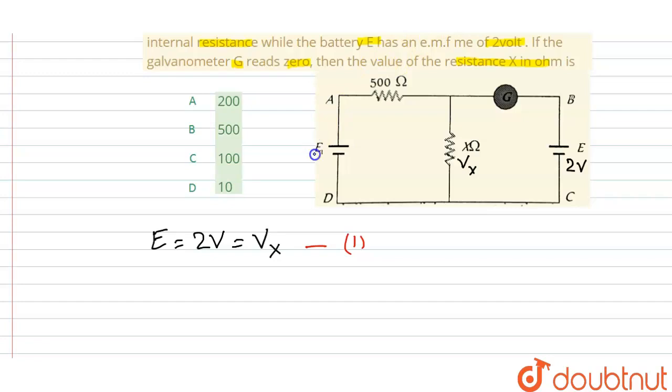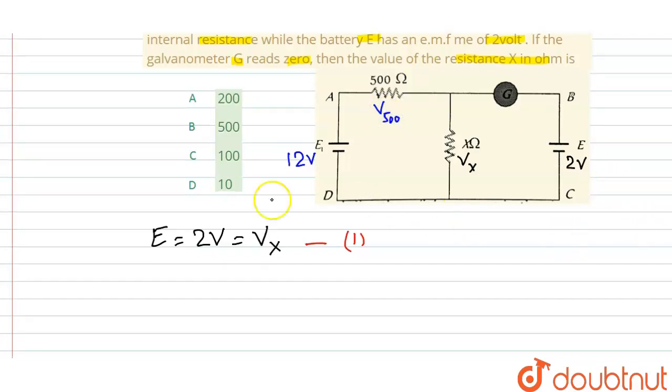The voltage is divided across this resistance and this resistance, that is 500 ohms. So now I can write here that E1, which equals 12 volts, will equal the voltage across the 5 ohm resistance and the voltage across X ohm resistance.